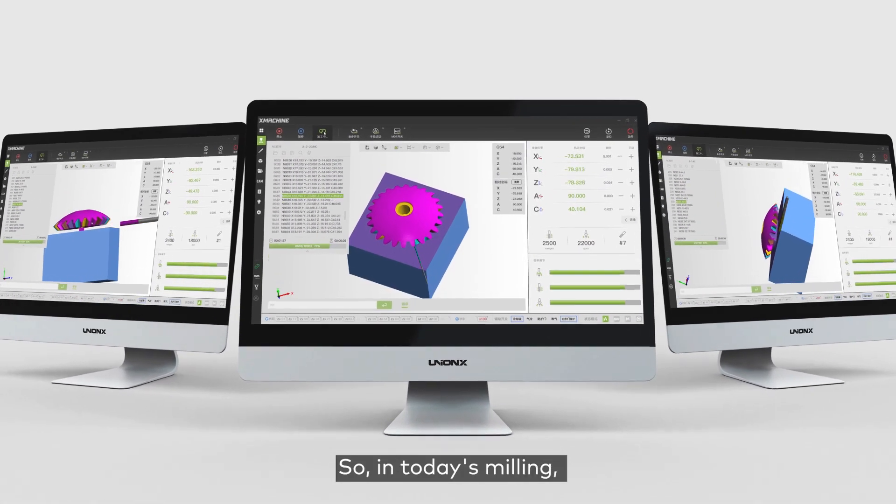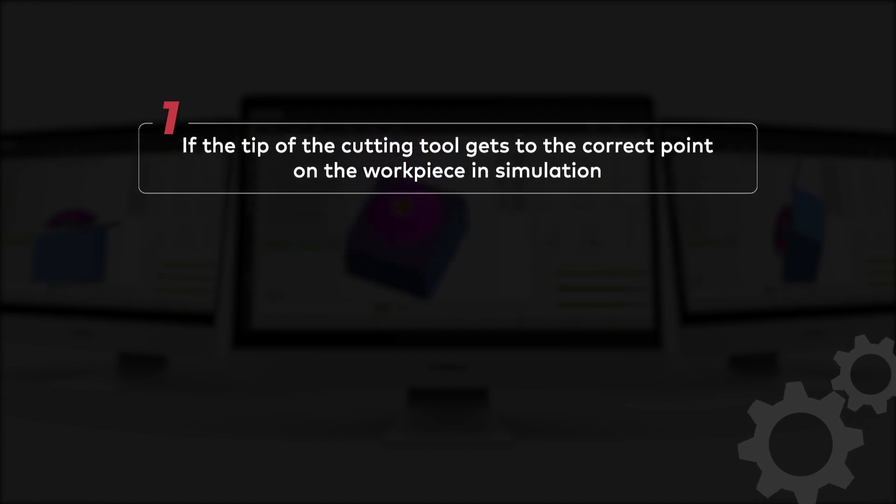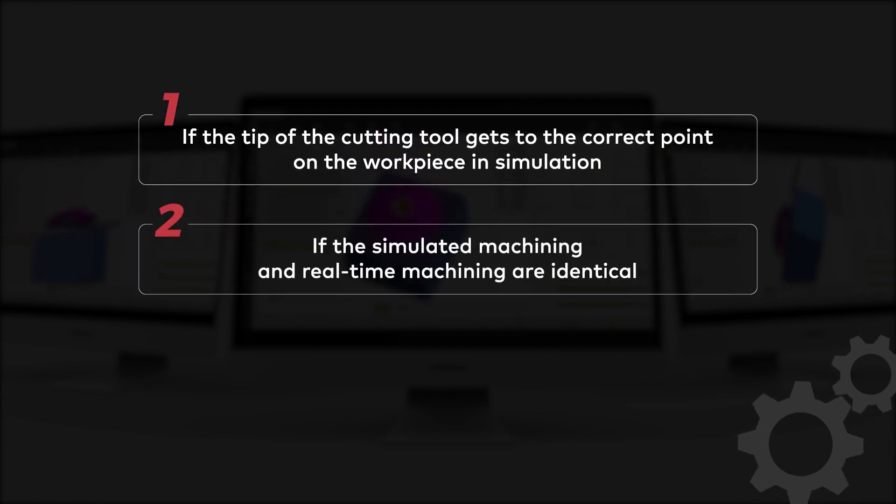So in today's milling, we want to see number one if the tip of the cutting tool gets to the correct point on the workpiece in simulation. Number two if the simulated machining and real-time machining are identical.